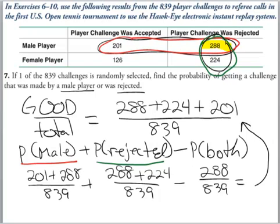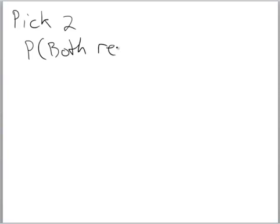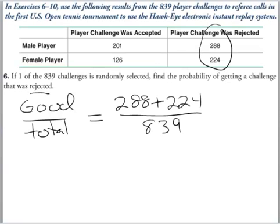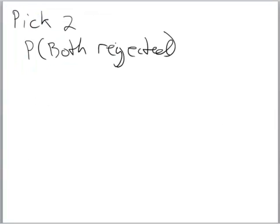Again, let's look at a simple example using that same table. Let's now pick two. What's the probability they were both rejected? Well, as we saw before, the probability that they're rejected is right here. We did it here. So that's a total of 288 plus 224, that's 512 over 839.